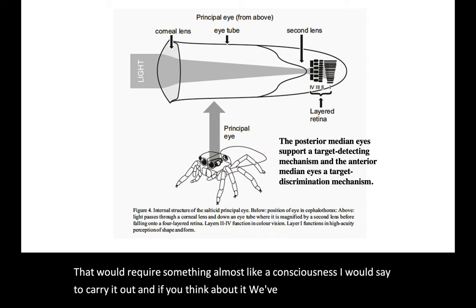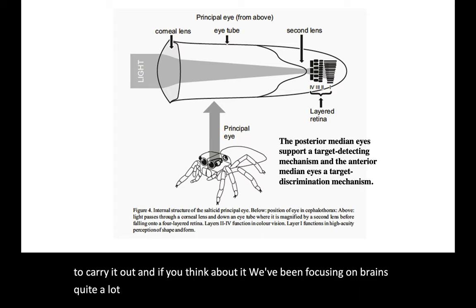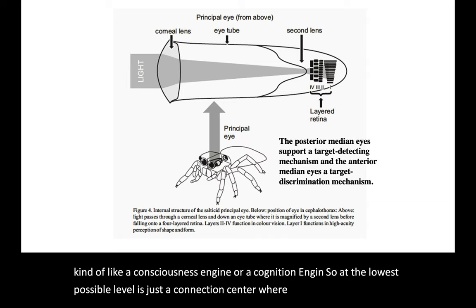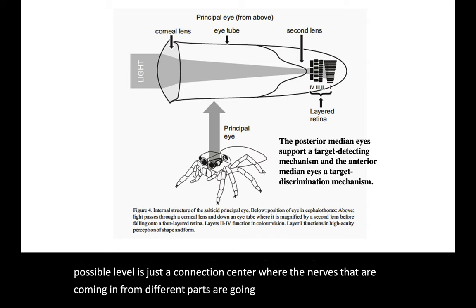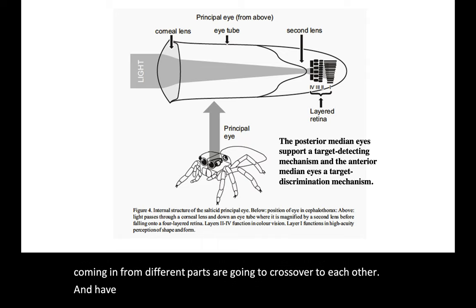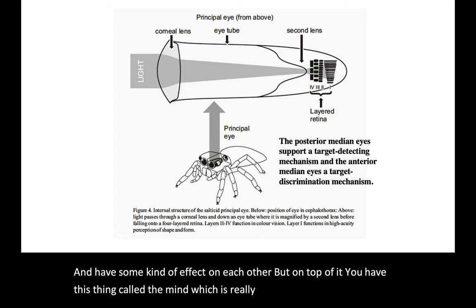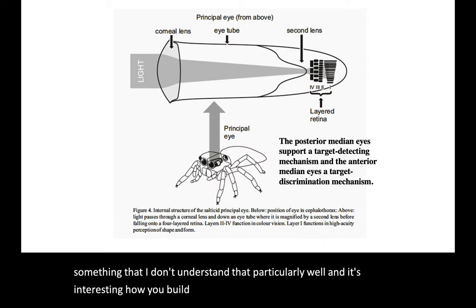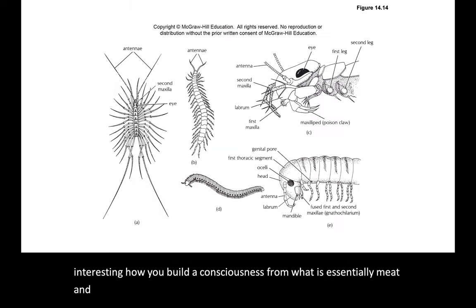And if you think about it, we've been focusing on brains quite a lot. And a brain is really just a bunch of nerves, but it's kind of like a consciousness engine or a cognition engine. So at the lowest possible level, it's just a connection center where the nerves that are coming in from different parts are going to cross over to each other and have some kind of effect on each other. But on top of it, you have this thing called the mind, which is really quite fascinating and something that I don't understand particularly well. It's interesting how you build a consciousness from what is essentially meat and chemicals.